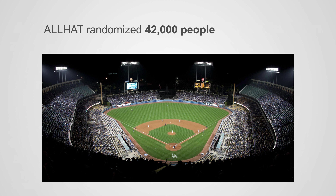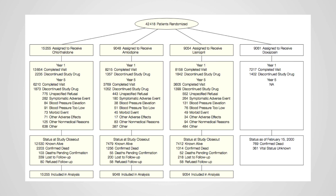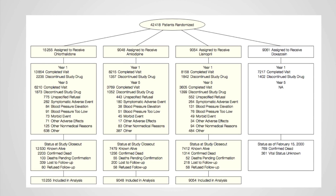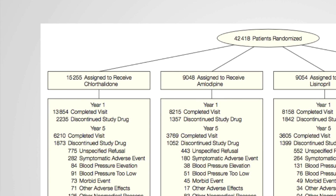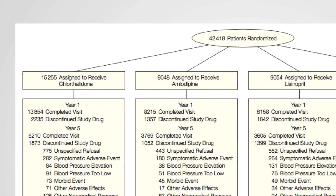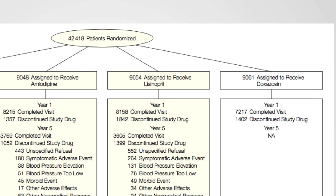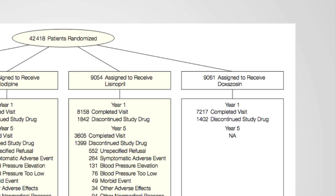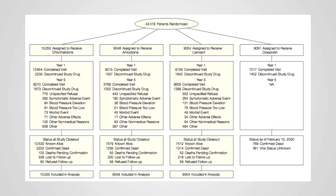ALLHAT randomized 42,000 people — enough to fill a Major League Baseball stadium. They were assigned to one of four groups: chlorthalidone, amlodipine, lisinopril, or doxazosin. The doxazosin group was stopped early because of increased rates of heart failure, and the other three groups went to completion.